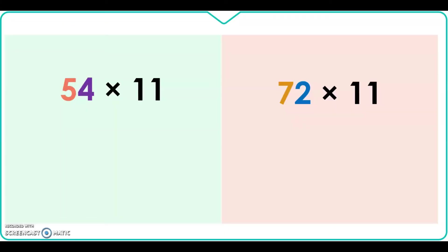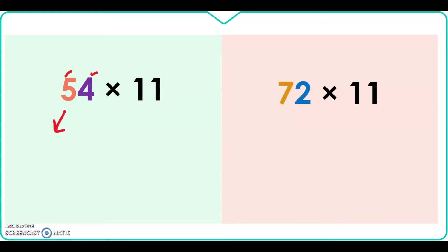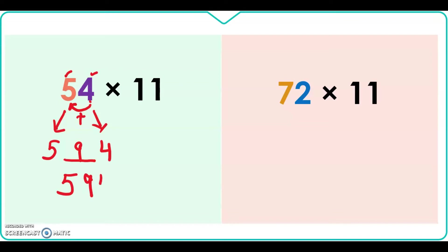Let's start. First we will solve two-digit numbers, then move to larger numbers. Here we multiply 54 times 11. The first step is to write the first digit as it is and the last digit as it is, leaving a space between them. Then we add those two digits: 4 plus 5 is 9, so we write 9 in the space. Our answer is 594.